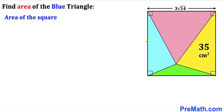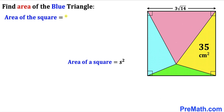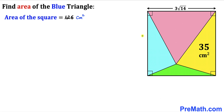Let's calculate the area of this square. Recall the formula: area of a square equals s squared, where s is the side length. In our case, the side length is 3√14, so the area is (3√14)² = 9 × 14 = 126 centimeter square.